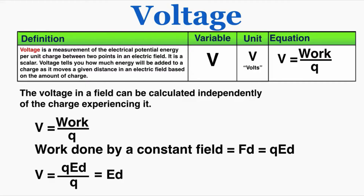Voltage in a field can be calculated independently of the charge experiencing it. Since V equals W/Q, and in a constant field the work done equals the force the field applies times the distance, and that force equals the charge times the electric field, we get W equals charge times field times distance. Plugging back into the voltage equation, the charges cancel out, leaving voltage equals the electric field times the distance traveled in the field: V = E × d.